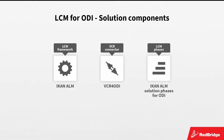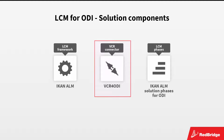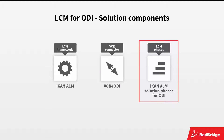The LCM4ODI solution consists of three components: ICANN ALM, the lifecycle management tool; the VCR4ODI connector, ensuring the link between ODI and VCR; and the ICANN ALM solution phases for ODI, which are used to automate the build and deploy processes.